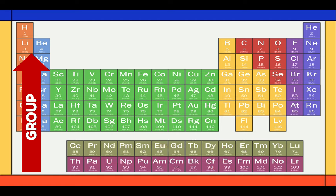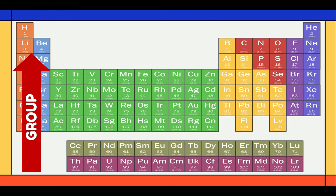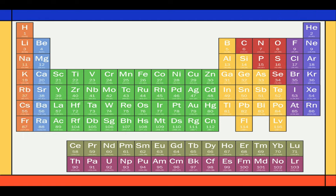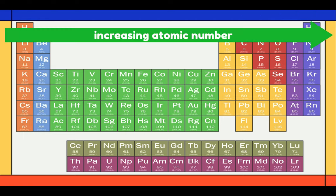Groups have similar physical and chemical properties. The group number can be written in a couple of different ways. First is from 1 to 18 — this is the IUPAC recommended numbering system, which is more unambiguous but less useful. Next is by naming the tall columns from 1 to 8. The structure of the table is based on the mass.